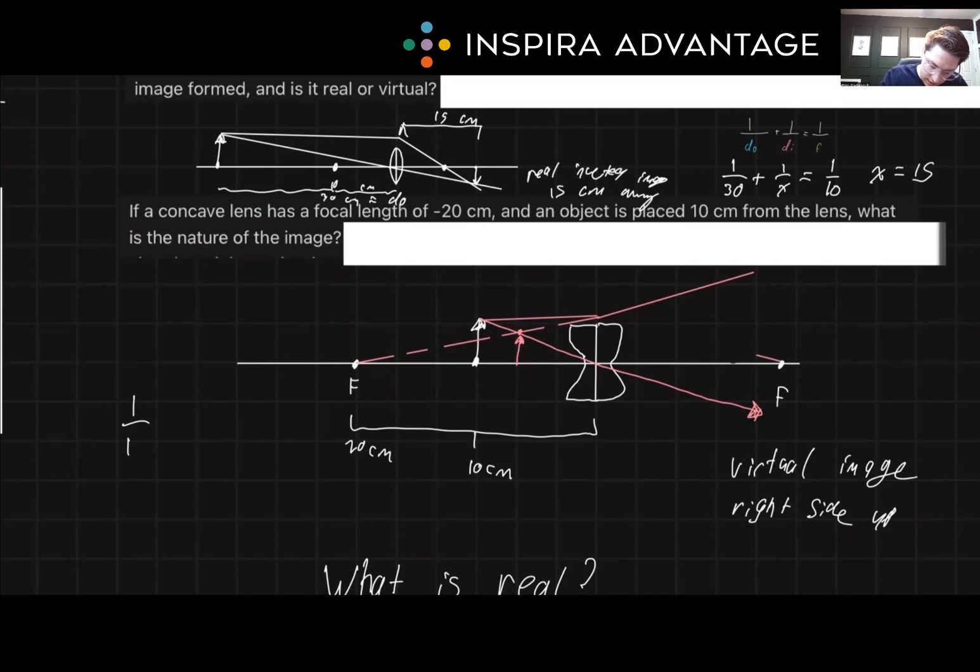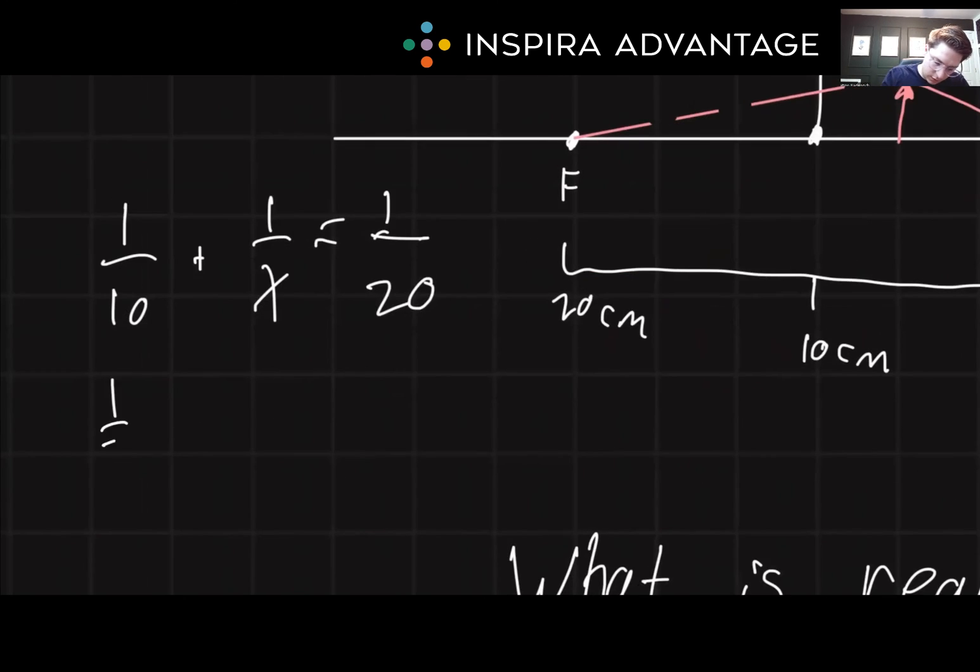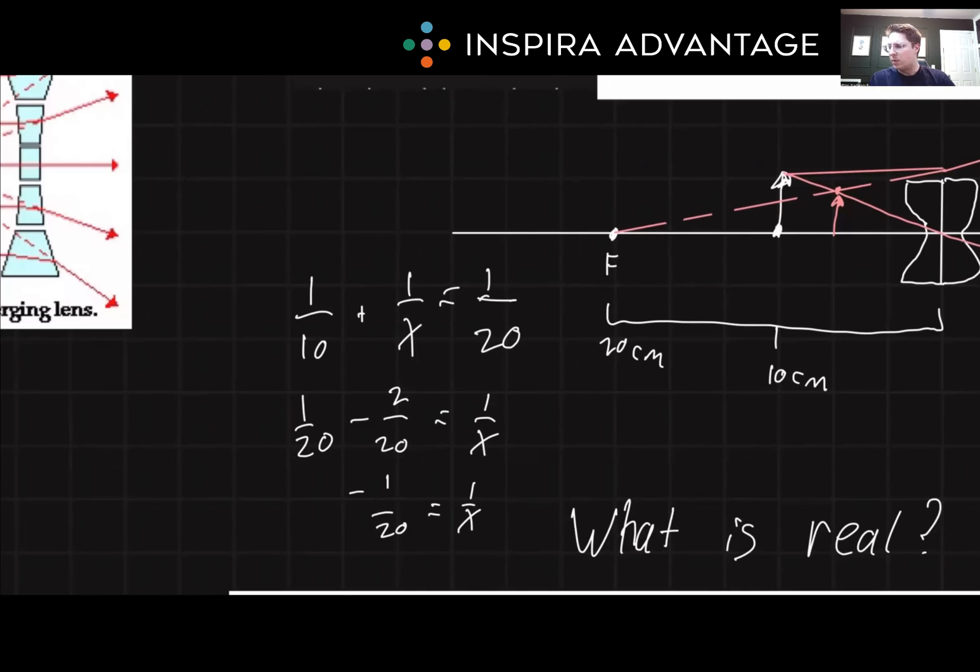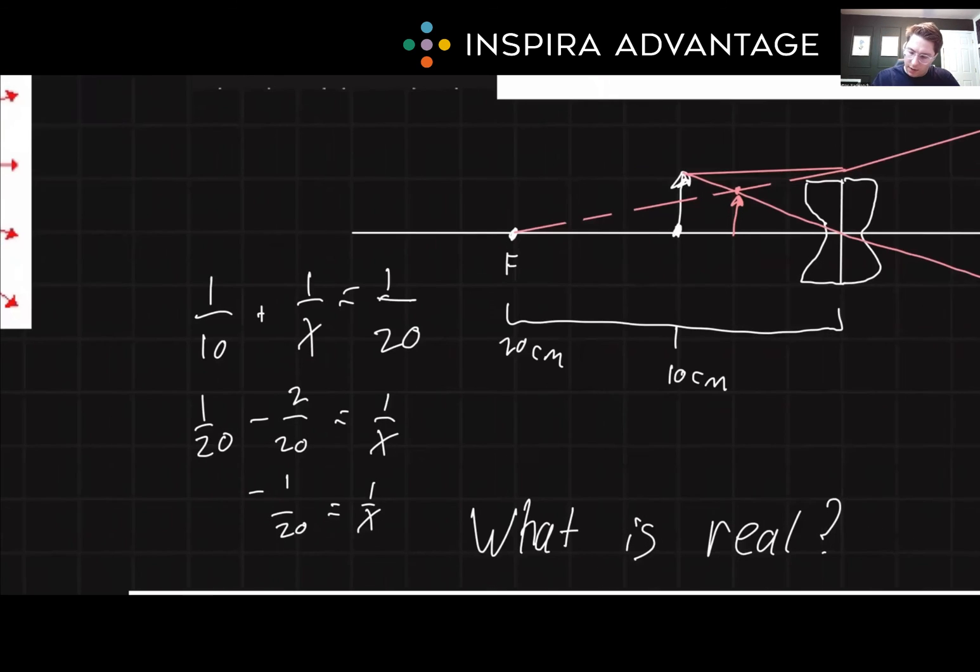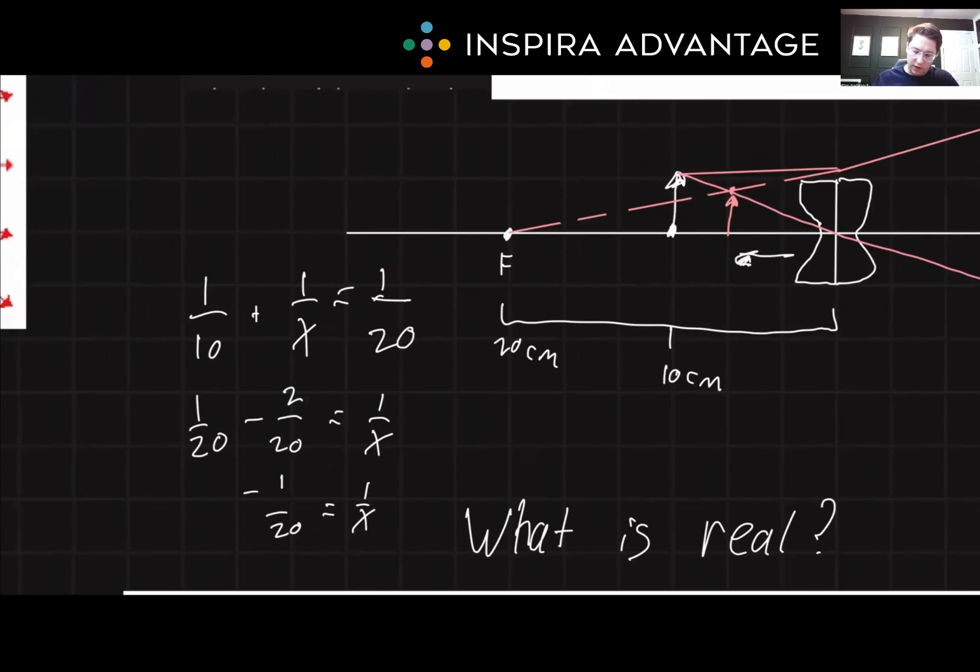So we have 1 over 10 plus 1 over x equals 1 over focal length 20. So now we'll solve for x: 1 over 20 minus 1 over 10. But I'm going to multiply both by 2. So minus 2 over 20 equals 1 over x. So now we have negative 1 over 20 equals 1 over x. And you might be saying, well, why is it negative? And that's just because we're on the left side. So we could take the absolute value of that if we wanted to see exactly where we are.